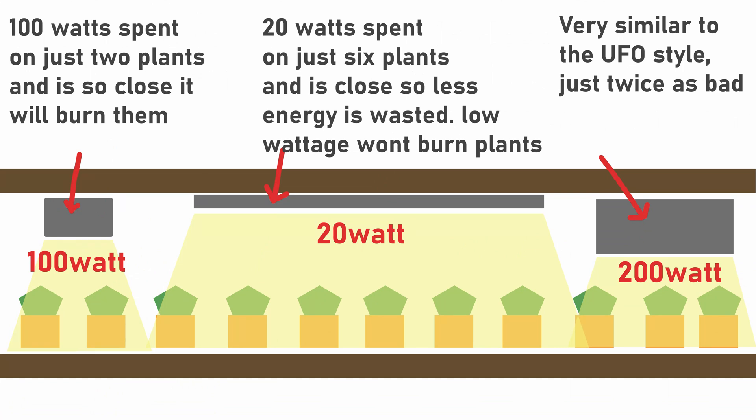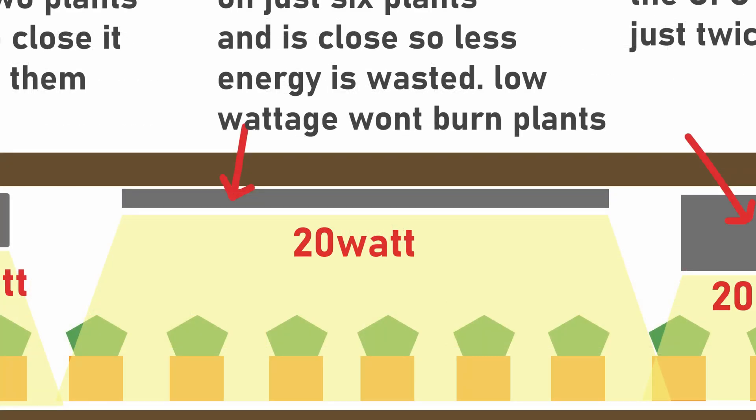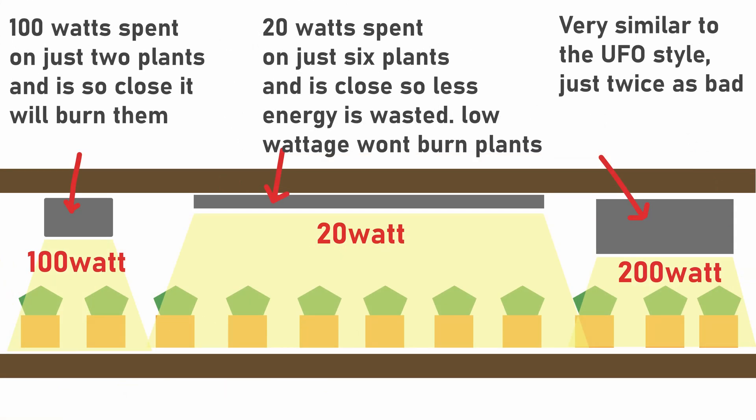However moving to the middle example with the bar style LED light or rope style you can see this covers six plants. It's way more efficient too for your plants because even though it's only 20 watts because of the proximity you're getting almost all your energy into the plant so it's going to work very well for this application. And if you find one bar at 20 watts is not enough you can always add another one up there to increase your wattage and your overall energy being given to your plants.